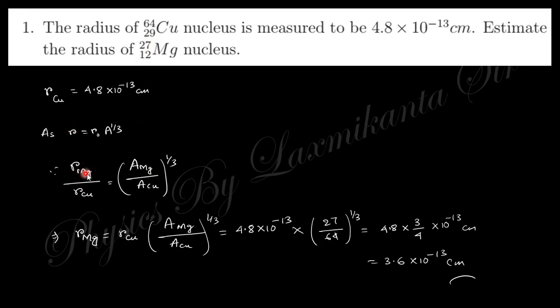So if you ratio these two, ratio radius of the magnesium and copper, you will get r₀ cancel out. And you know the radius of copper, so easily you can find out the radius of Mg. So this will be this one.